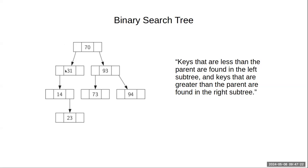For example, everything less than 70 will be on the left half — 31, 14, and 23. Everything bigger than 70 is guaranteed to be in the right half. By enforcing this rule we can eliminate half of everything each time, just like binary search. If the thing we're looking for is greater than 70, we don't need to look at anything in the left subtree. Looking for 45 — we go left, reach 31, 45 is greater so we go right, but there is no right child, so 45 is not in the tree at all.